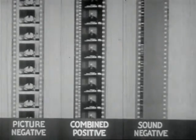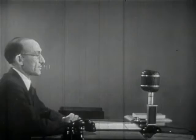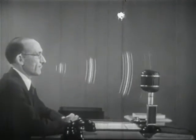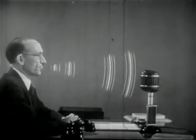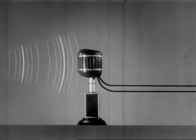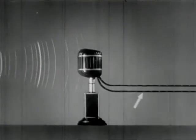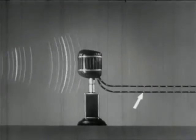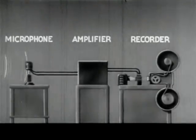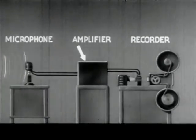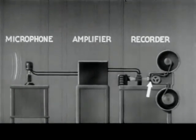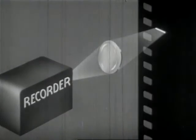Since the photographic film is affected only by light, it is necessary for the recording of sound to convert the sound waves to corresponding changes in light. As I speak, the sound waves produced by my voice are transmitted through the air to the microphone, where these sound waves are converted to changes in an electric current. These variations in the electric current are then amplified and used to control the light falling on the photographic film.